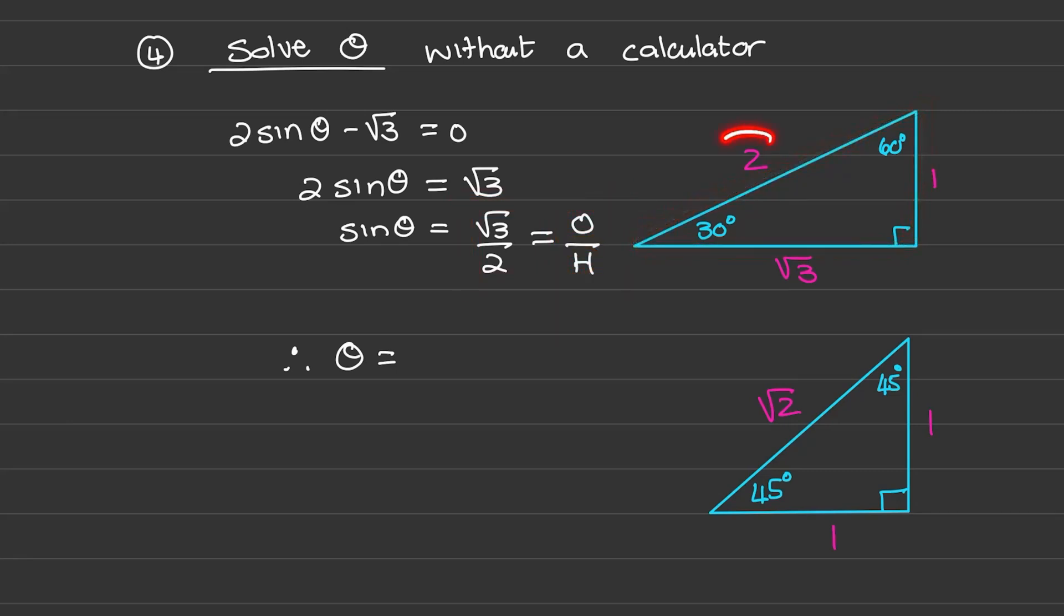the hypotenuse is 2, and the angle opposite √3 is 60 degrees. Therefore, θ = 60 degrees.